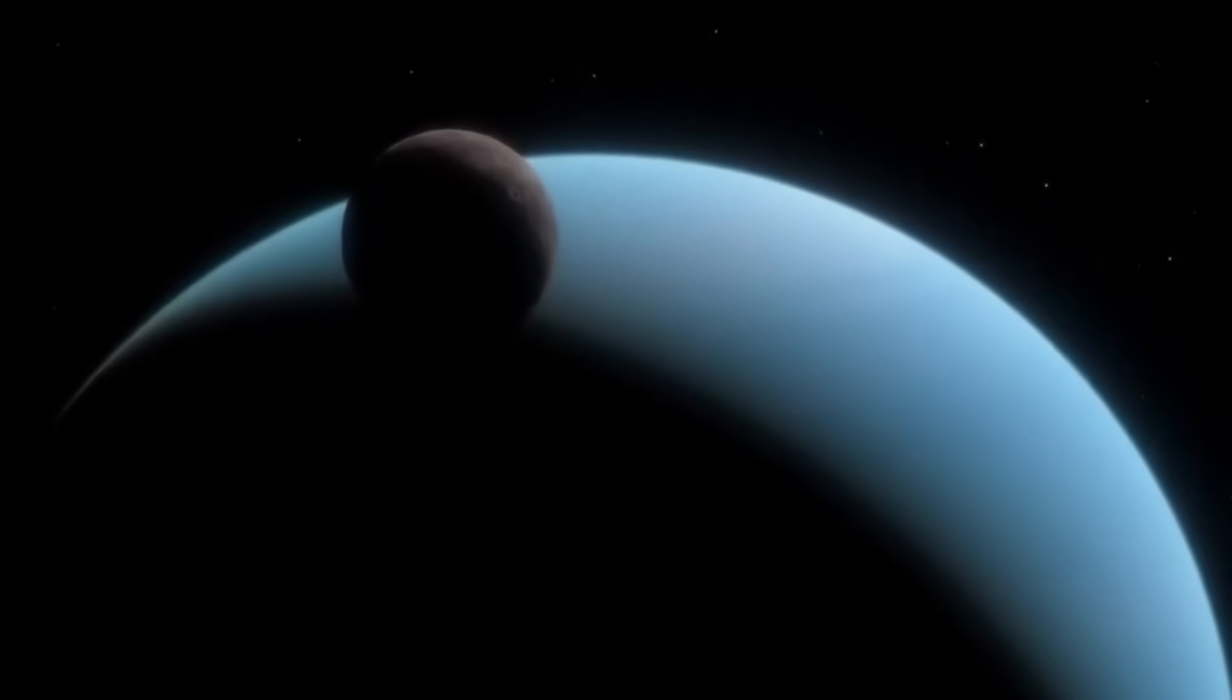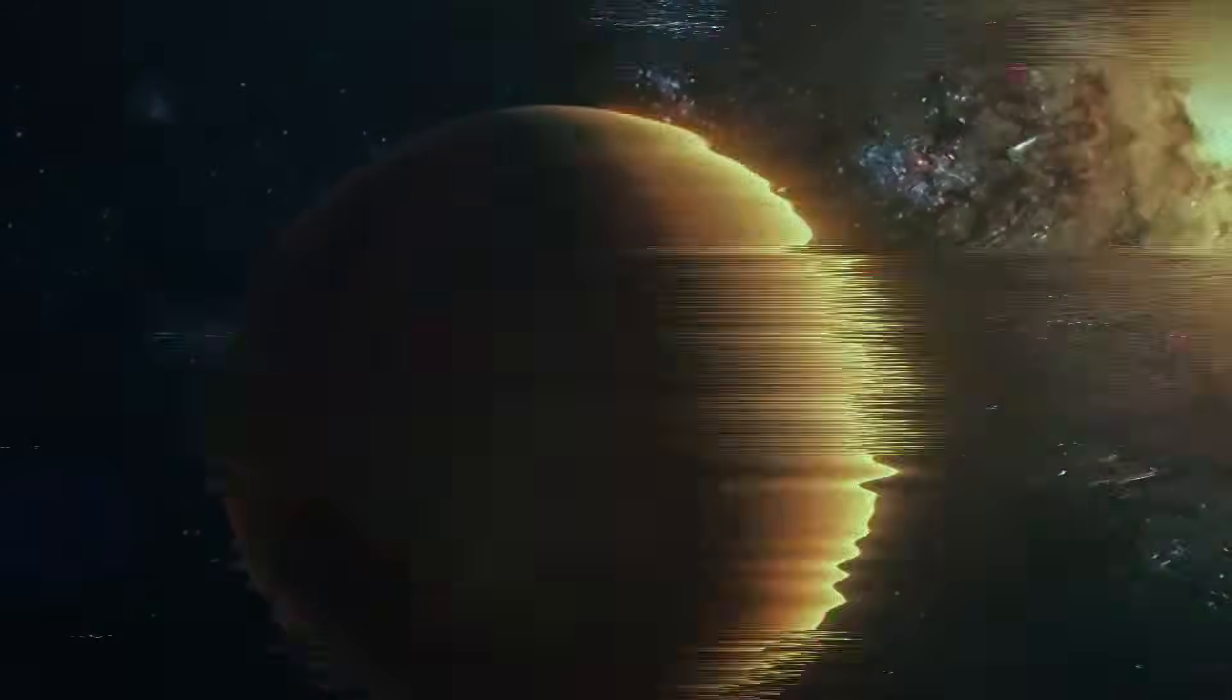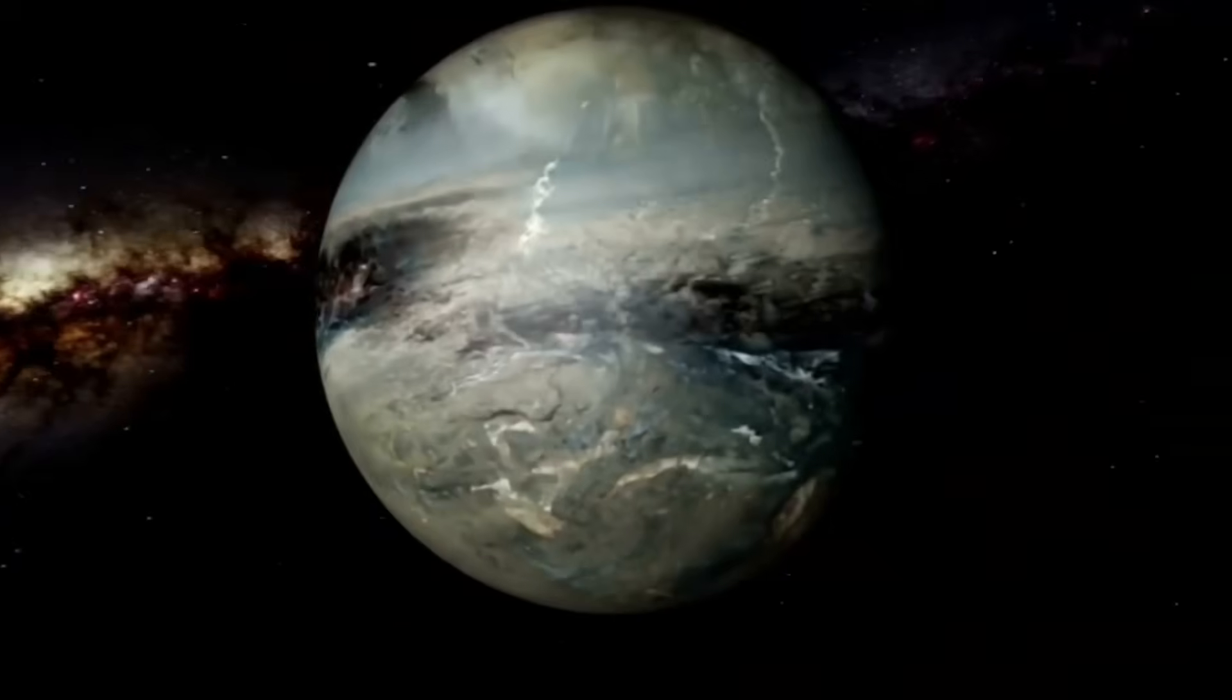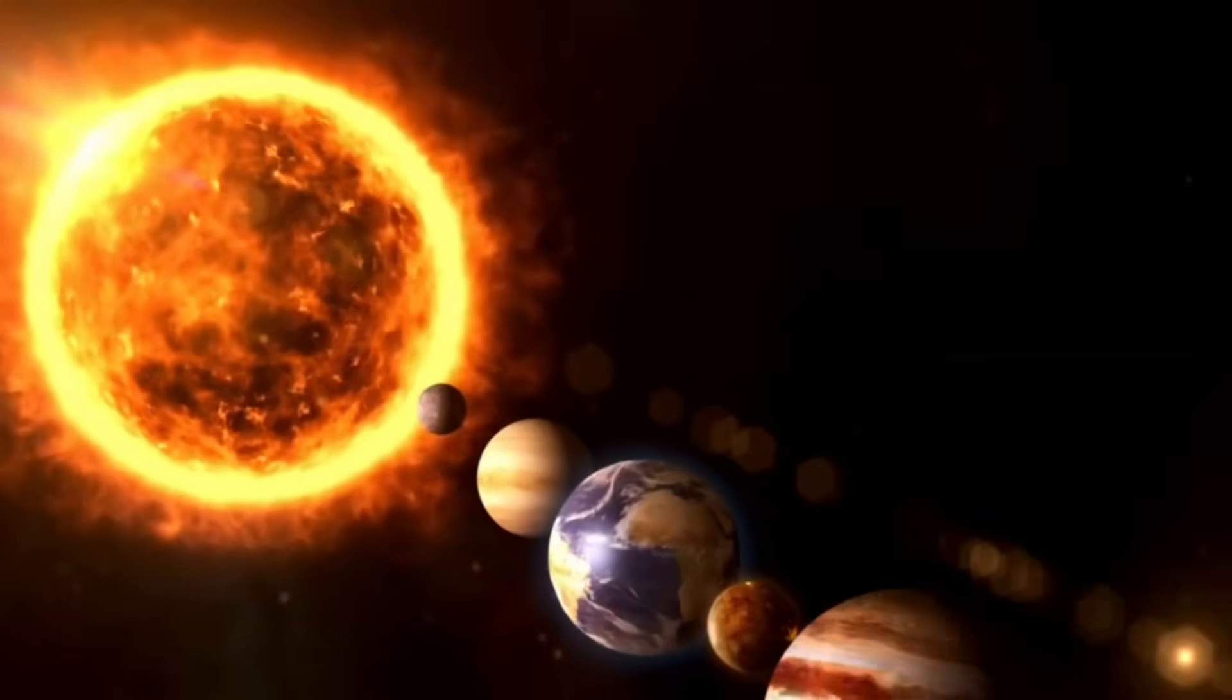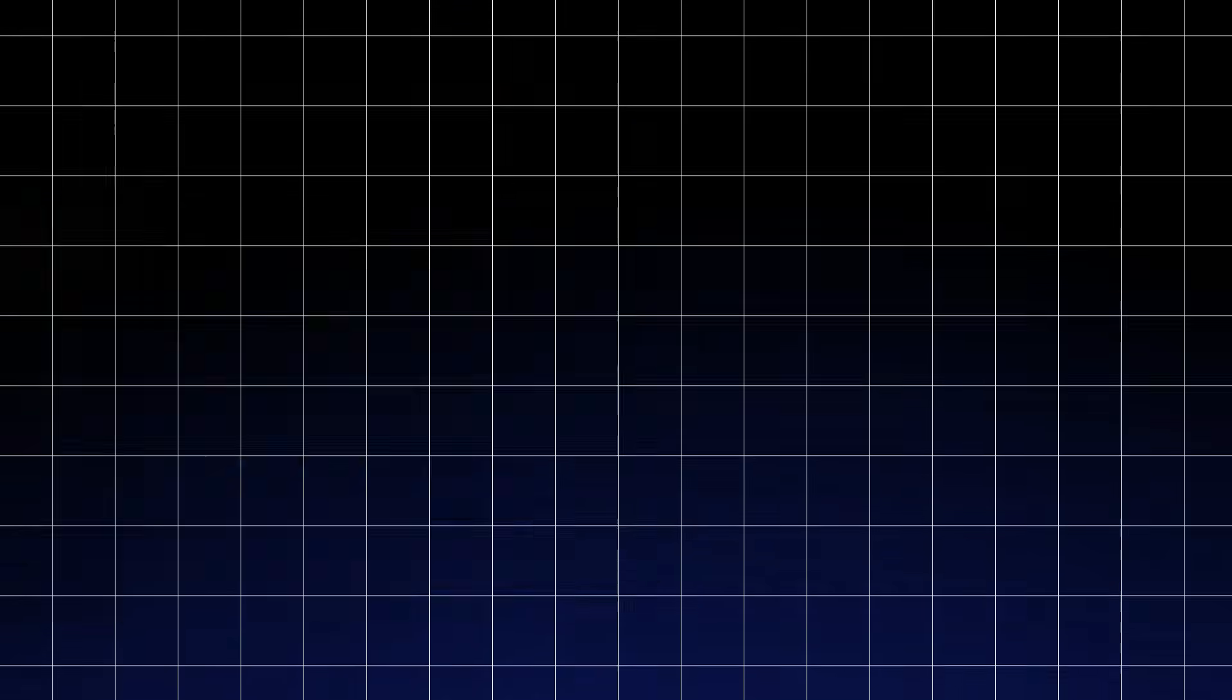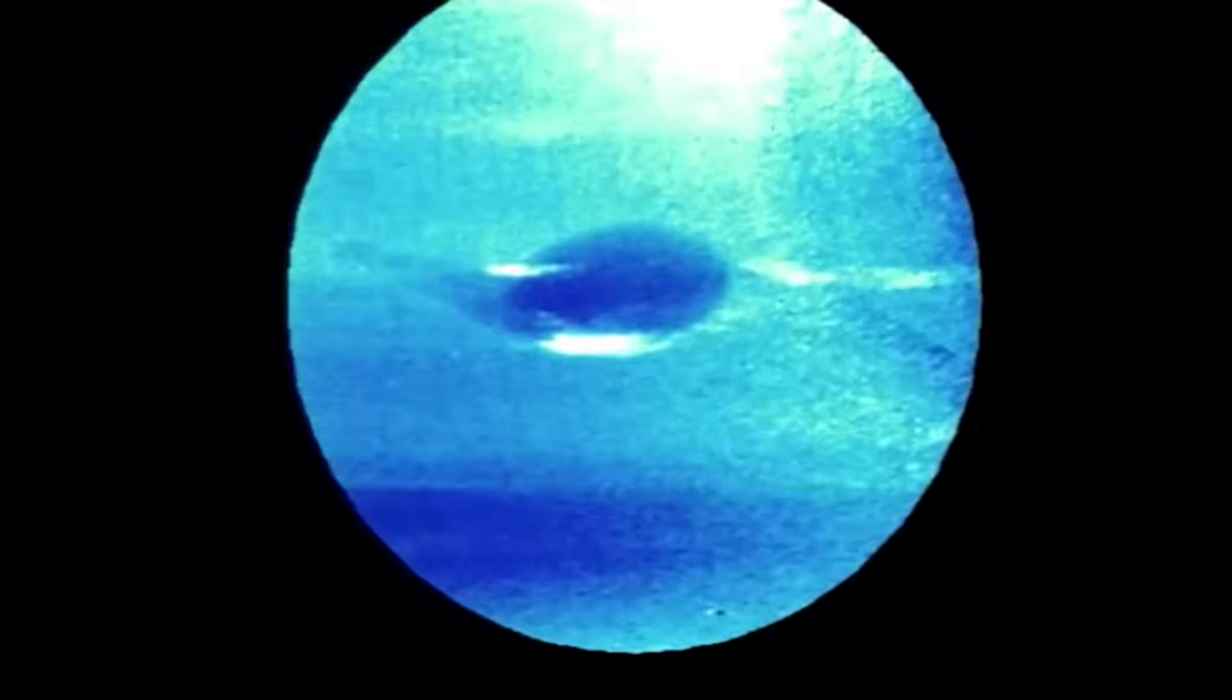For Neptune itself, the collision may also reset scientific assumptions about its internal heat. The gas giant has long puzzled scientists by emitting more heat than it receives from the Sun. This event, while external, might offer indirect answers. If similar impacts have occurred in the planet's deep past and gone unnoticed, then periodic injections of kinetic energy could be contributing to Neptune's persistent internal warmth. In other words, some of Neptune's unexplained thermal behavior might not be intrinsic at all, but the result of ancient cosmic violence.